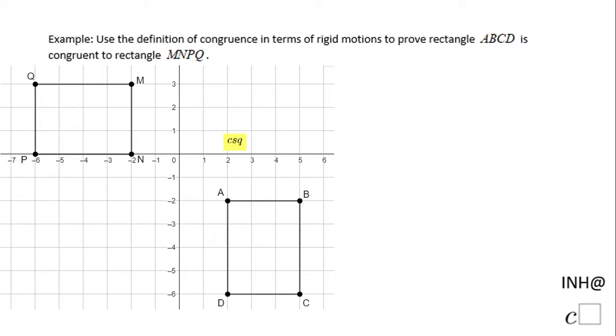Welcome back on I Need Help and C Square. We're going to look at a problem where we are asked to find the sequence of rigid motion, rigid transformations, that will bring rectangle ABCD on top of this rectangle.